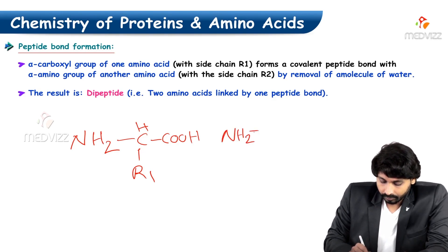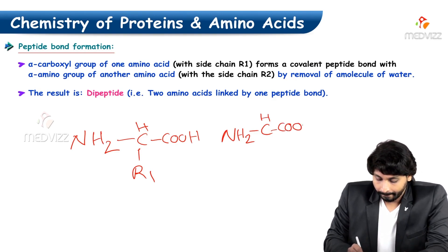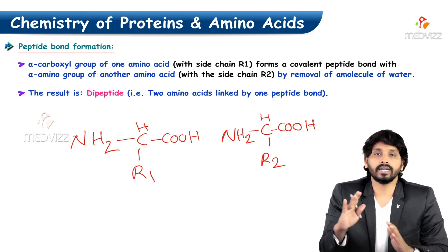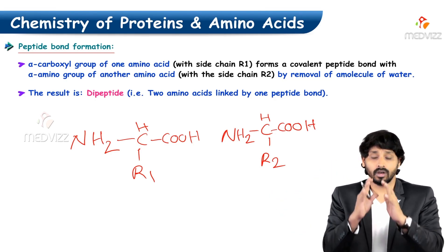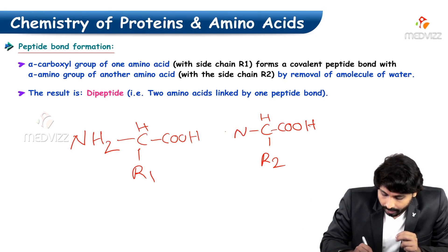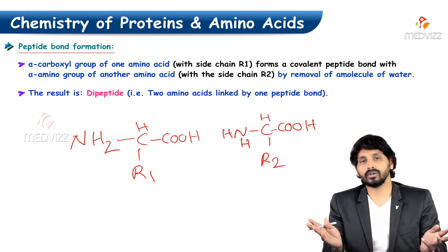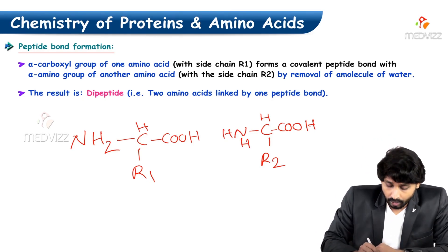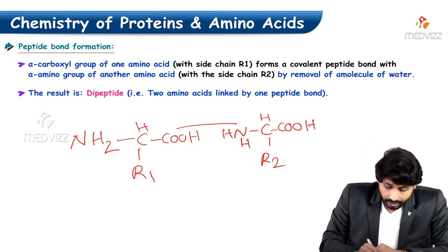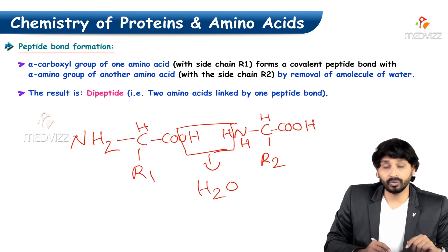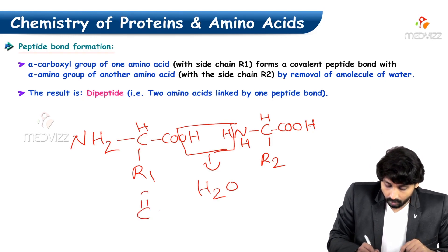Here is another amino acid. R1 indicates one amino acid and R2 indicates the other. In the second amino acid, the amino group is written as NH2. From the carboxylic group of the first amino acid, the OH group, and the hydrogen from the amino group of the second amino acid are removed as a water molecule.